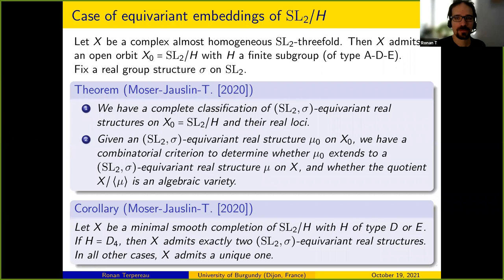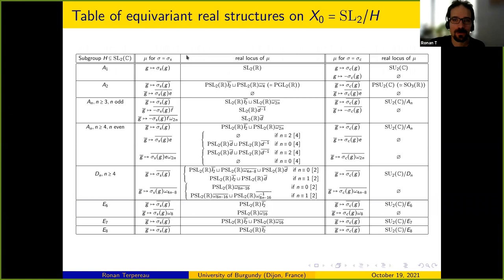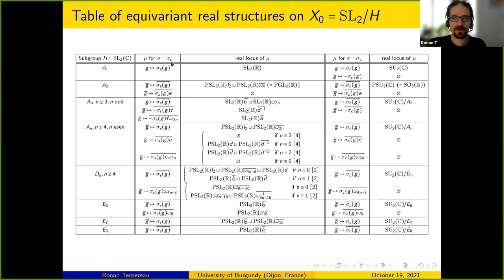The table is not to scare you, just to give an idea of what it looks like. On the left you have H: the trivial group (A_1), cyclic groups of various orders, binary dihedral groups, and E6, E7, E8. Then you consider σ_S (split, i.e., SL2(R) acting) and σ_C (compact, i.e., SU2 acting). For instance, for SL2/A_N with N ≥ 4, there are three inequivalent (G, σ_S)-equivariant real structures with representative formulas and a description of the real locus.